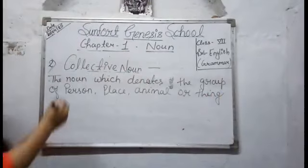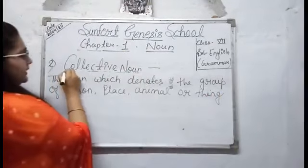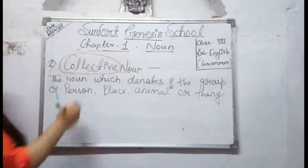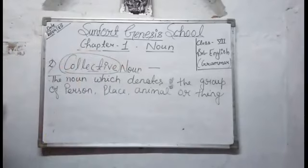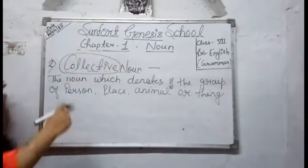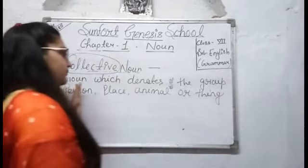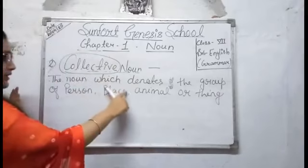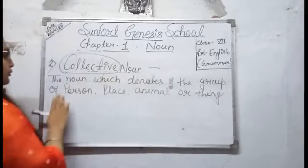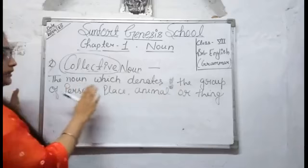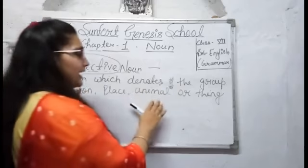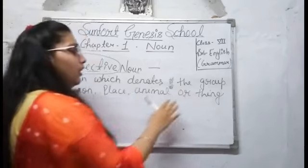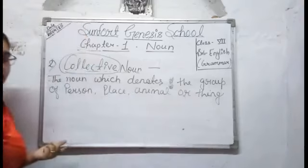As it is clear from its name — collective. Collective noun means the noun which denotes the group of person, place, animal, or things.